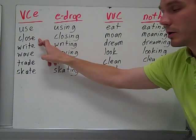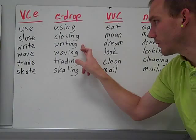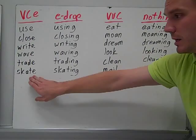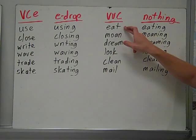So our VCE words: you have 'use,' drop the e, it becomes 'using.' 'Close,' drop the e, it becomes 'closing.' 'Write,' e-drop, it becomes 'writing.' 'Wave' becomes 'waving.' 'Trade' becomes 'trading,' and 'skate' becomes 'skating.' All of these have consonant-vowel-consonant-e. You e-drop and you add -ing.